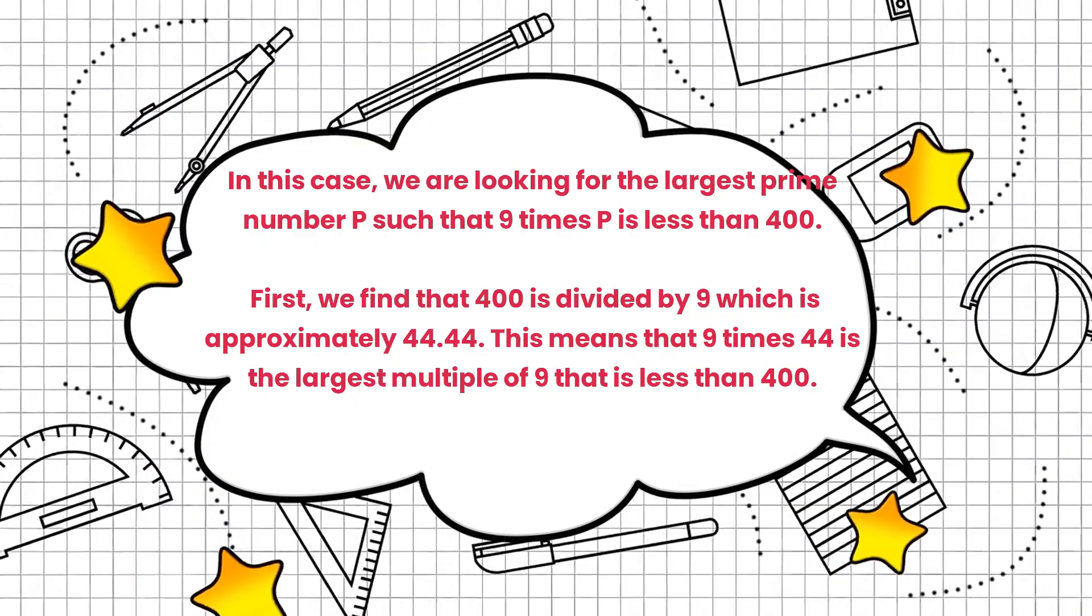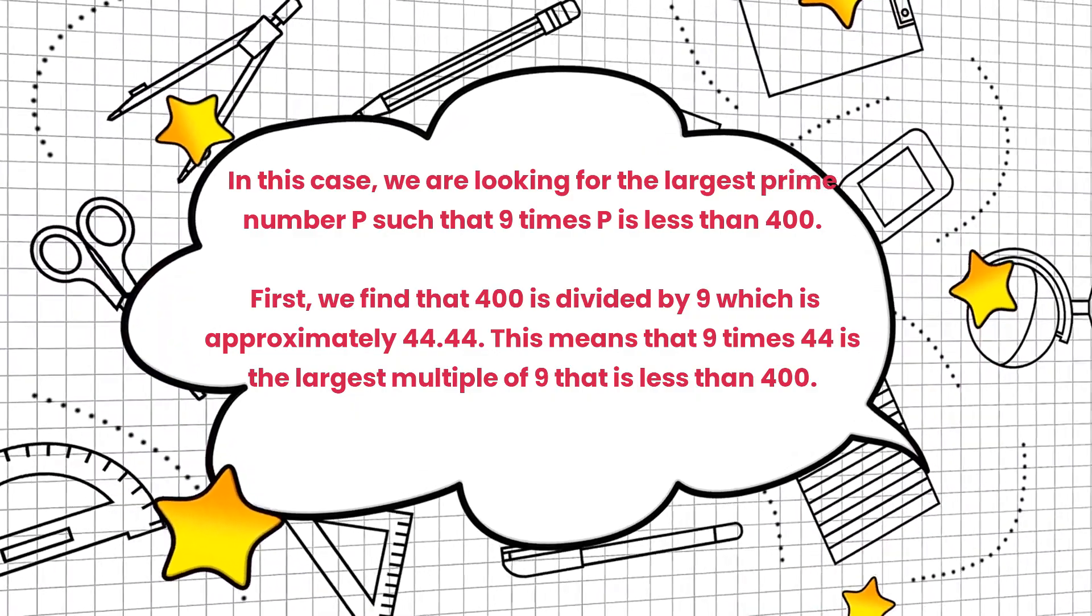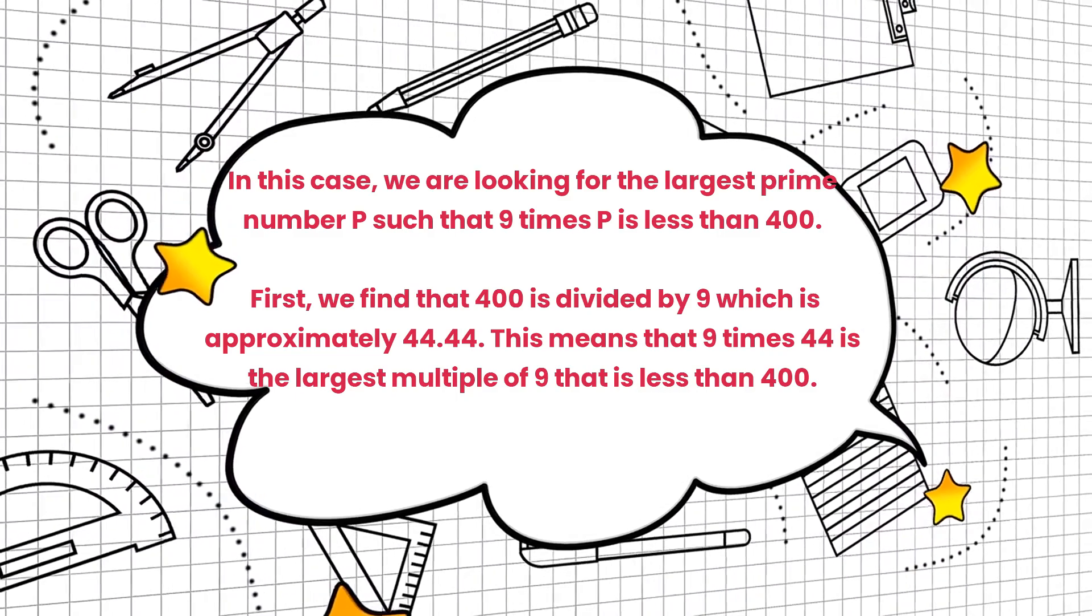In this case, we are looking for the largest prime number P such that 9 times P is less than 400.